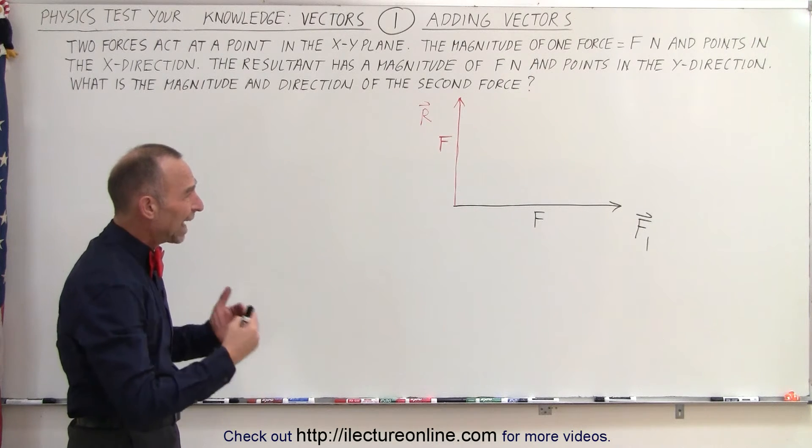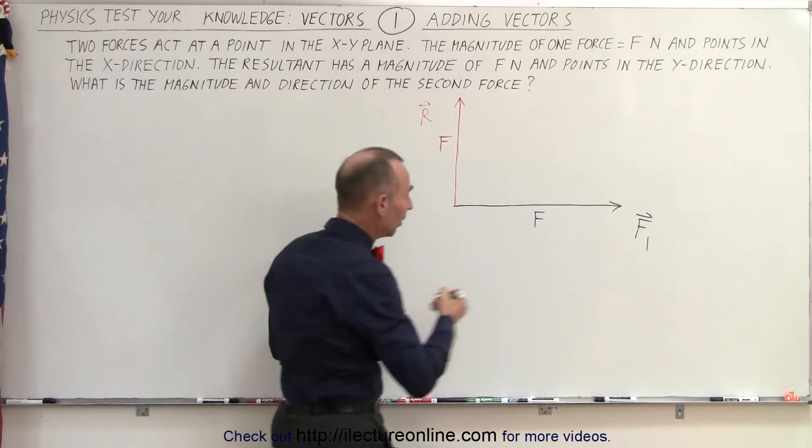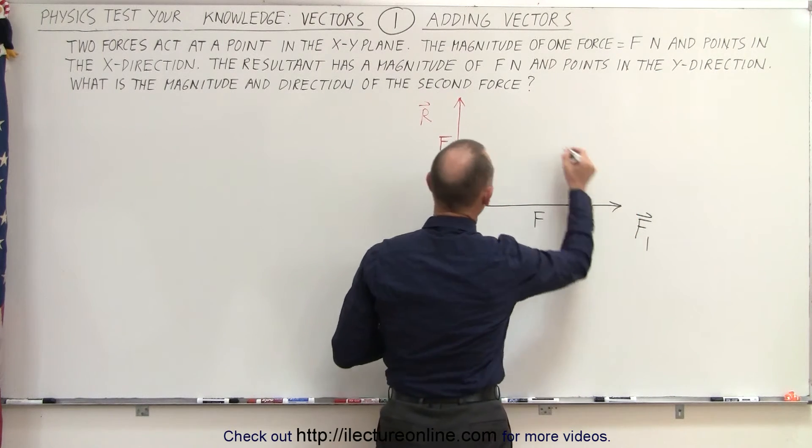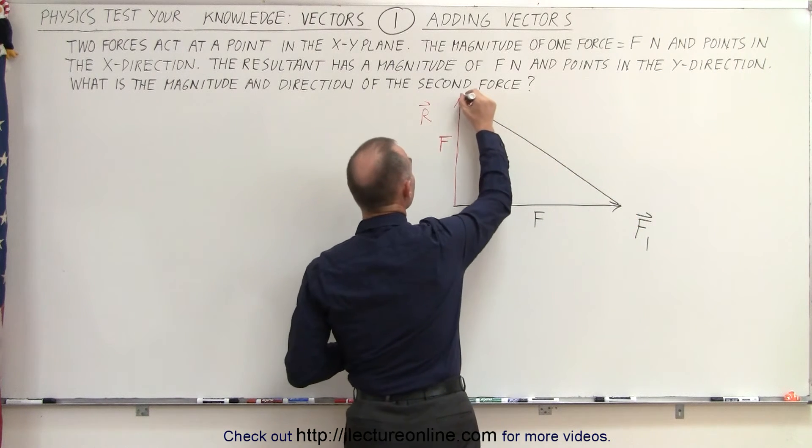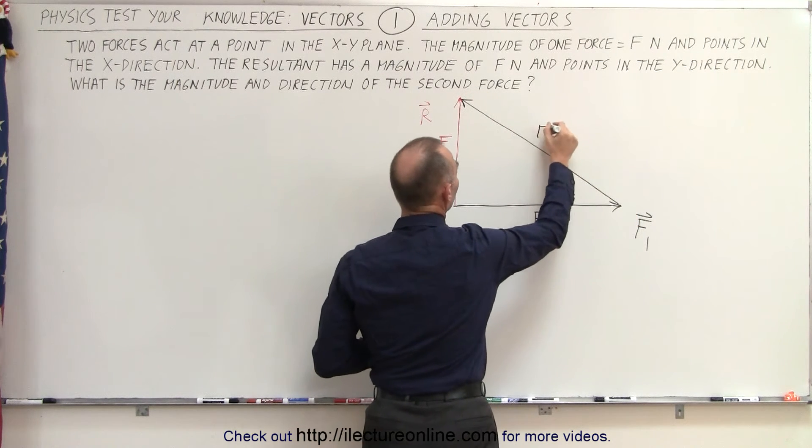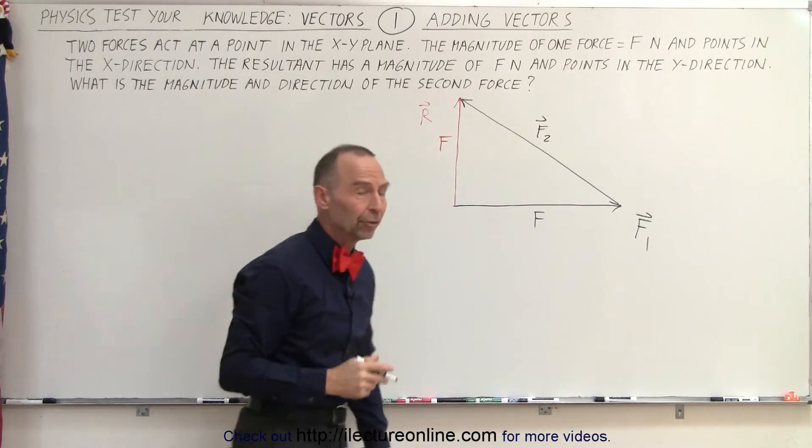Now the second force added to the first force should add up to the resultant, which means our second force, if we start from this point, should end up over here. Like so. So this becomes force 2, and now we have to find the direction and magnitude of that.